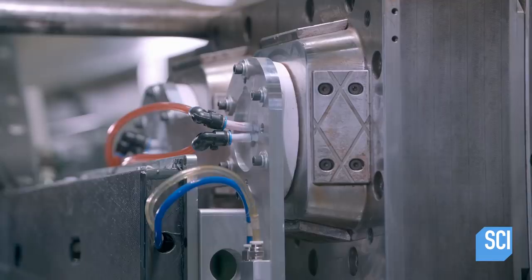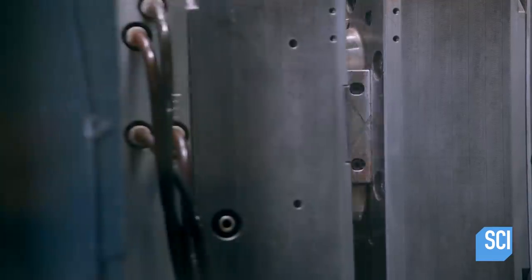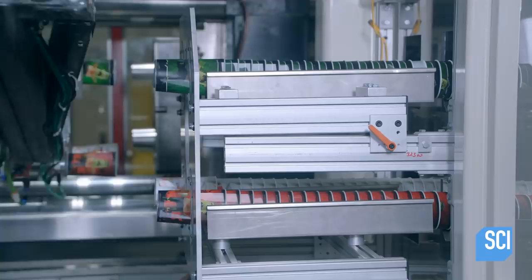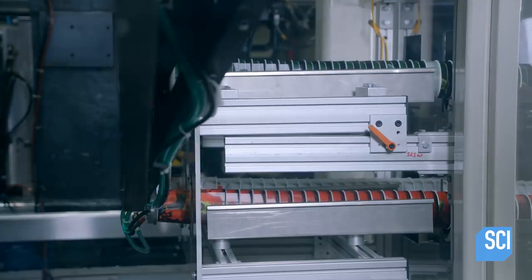Molten polypropylene flows into the mold, and as it solidifies and becomes a cup, the 3D label fuses to it. Robots retrieve the 3D cups and stack them on their sides to await final inspection.